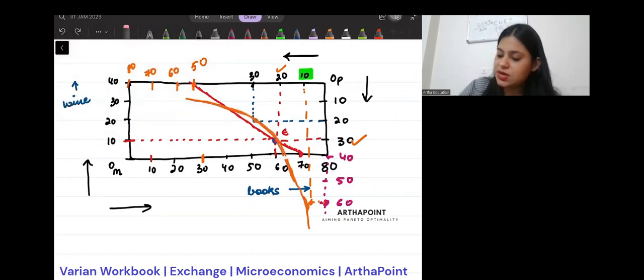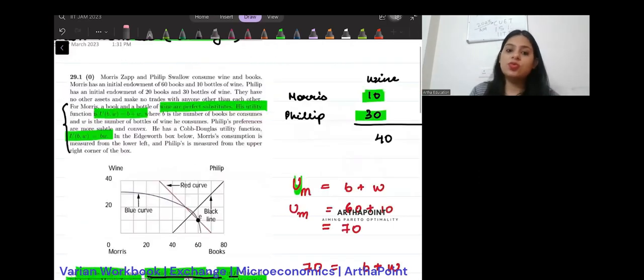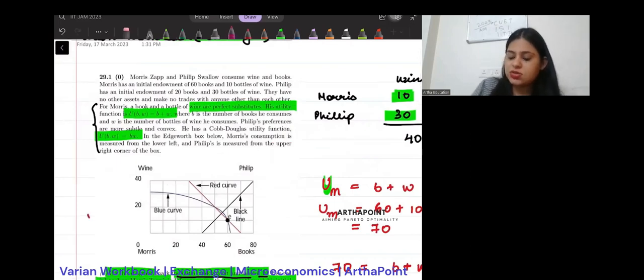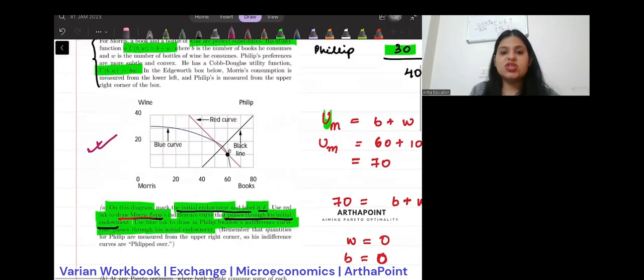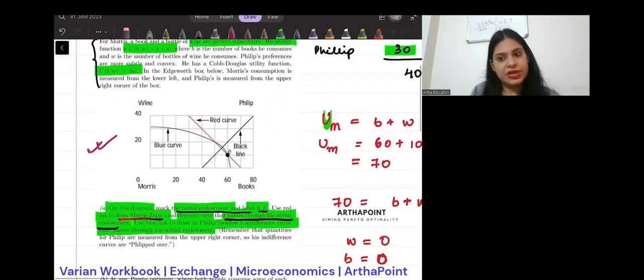I will just keep myself to what happens within the Edgeworth box. So, something like this will be your answer to this first part. We have been able to draw the two ICs which are passing through the endowment bundle. The first part asked you to plot the endowment bundle and use the two inks to show the different ICs. And that is what we did. Thank you.